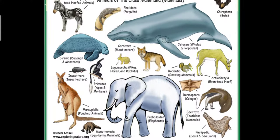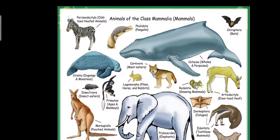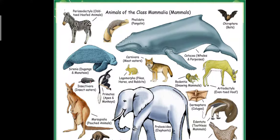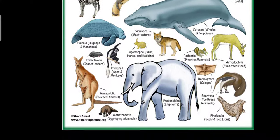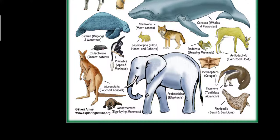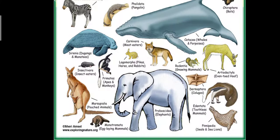These are examples of animals belonging to class Mammalia: odd-toed hoofed animals, pangolin, bats, whales and porpoises, carnivores like fox and wolves, insectivorous animals, primates, pikas, hares and rabbits, toothless mammals, seals and sea lions, elephants, egg-laying mammals, and pouched animals that is marsupials or kangaroo.